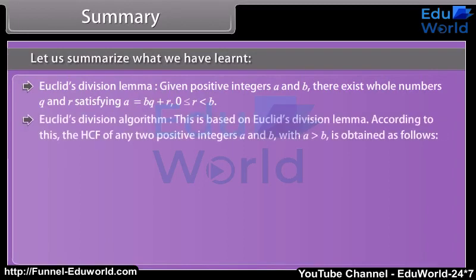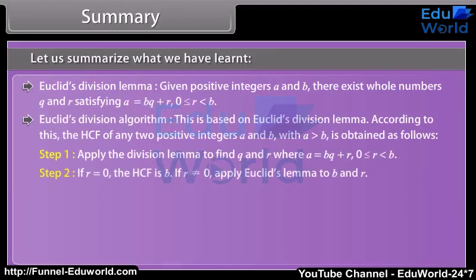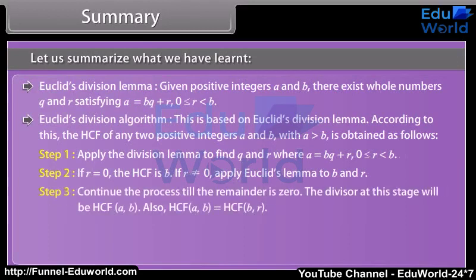Euclid's Division Algorithm is based on Euclid's Division Lemma. The HCF of any two positive integers A and B, with A > B, is obtained as follows: (1) Apply the Division Lemma to find Q and R where A = BQ + R, 0 ≤ R < B. (2) If R = 0, the HCF is B; if R ≠ 0, apply Euclid's Lemma to B and R. (3) Continue until the remainder is 0. The divisor at this stage is HCF(A,B). Also, HCF(A,B) = HCF(B,R).